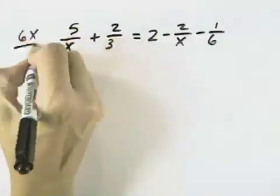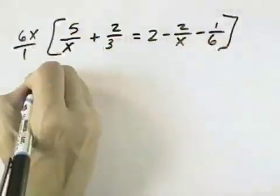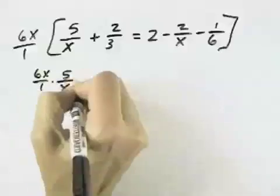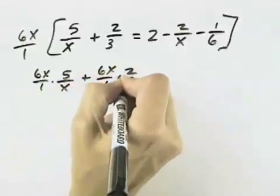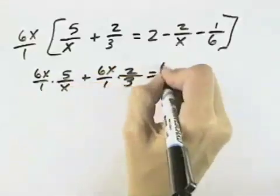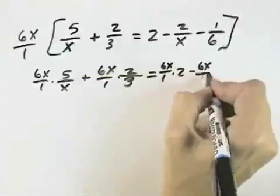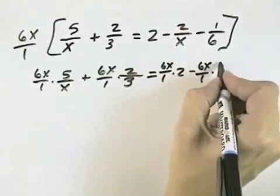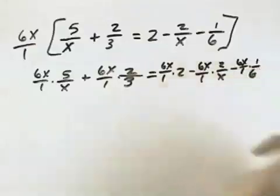So what we're going to do is multiply through our entire equation on both sides by 6x. So we'll have 6x over 1 times 5 over x plus 6x over 1 times 2 thirds equals 6x over 1 times 2 minus 6x over 1 times 2 over x and then minus 6x over 1 times 1 sixth.